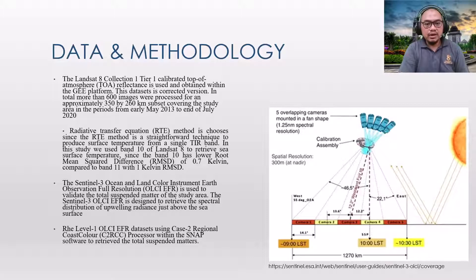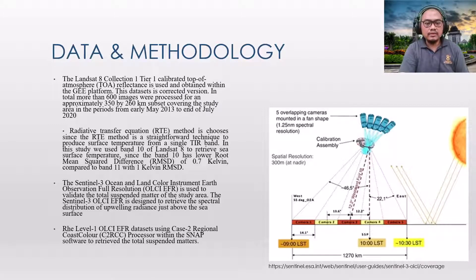The Radiative Transfer Equation (RTE) method was chosen since it is a straightforward technique to produce surface temperature from a single thermal infrared (TIR) band. In this study, Band 10 of Landsat 8 was used to retrieve sea surface temperature, since Band 10 has a lower root mean squared difference (RMSD) of 0.7 Kelvin compared to Band 11 with 1 Kelvin RMSD.